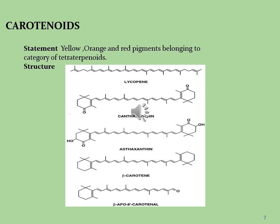Lycopene is a bright red carotenoid hydrocarbon found in tomatoes and other red fruits and vegetables such as red carrots, watermelons, grapefruits, and papayas, but it is not present in strawberries and cherries. Although lycopene is chemically a carotene, it has no vitamin A activity. It is used as a food supplement for high blood pressure, high cholesterol, and cancer, but there is no good scientific evidence to support these uses.